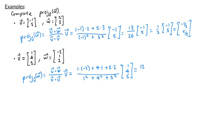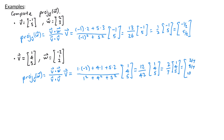Simplifying this, we have 12 over 42 times the vector 1, 4, 5, which is 2 sevenths times 1, 4, 5. That means that my vector is 2 sevenths, 8 sevenths, and 10 sevenths. So that's the projection of w onto v.